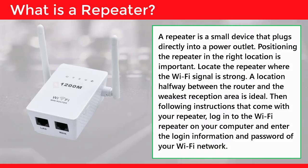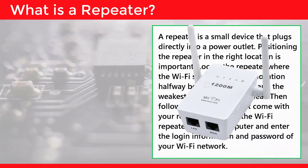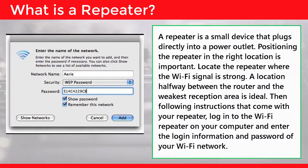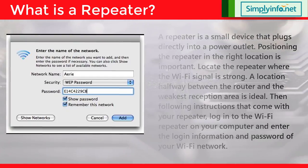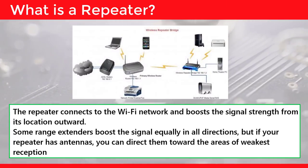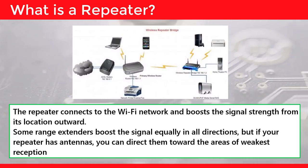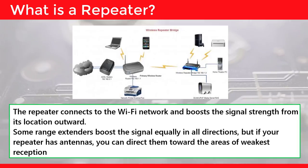Following the instructions that come with your repeater, log in to the Wi-Fi repeater on your computer and enter the login information and password of your Wi-Fi network. The repeater connects to the Wi-Fi network and boosts the signal strength from its location outward.